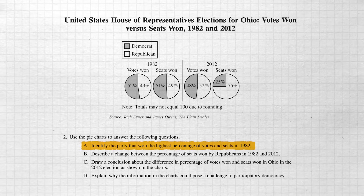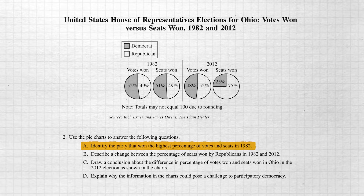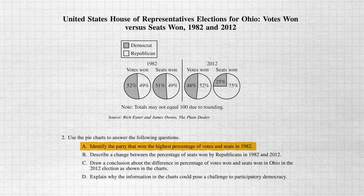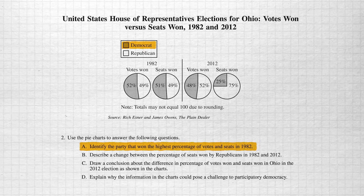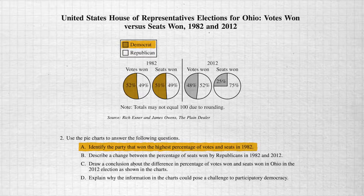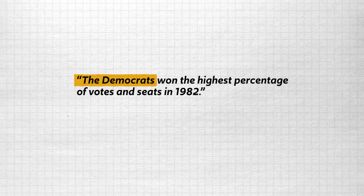Before they ask me to do all that explaining, they're going to give us two soft-toss questions. Letters A and B are really free points if you can understand the numbers they give you. Look at A: 'Identify the party that won the highest percentage of votes and seats in 1982.' Slap that overactive brain in the face — this is just as easy as it sounds. In 1982, who won the most votes and seats? Clearly it's the Democrats. Since the prompt begins with 'identify,' all you have to do is name the party in a complete sentence: 'The Democrats won the highest percentage of votes and seats in 1982.' Done — I just earned that point.